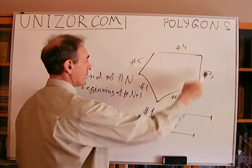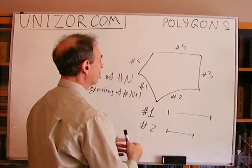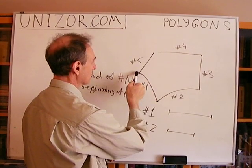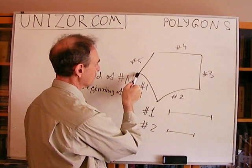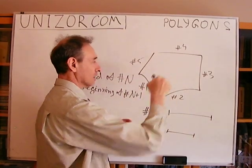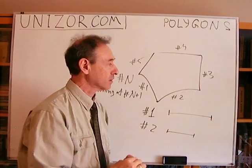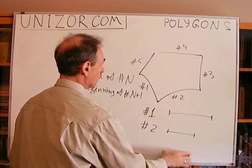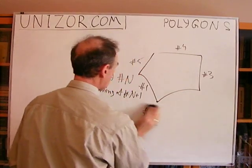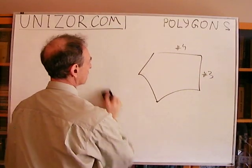Now, at the very end, when we have exhausted all the segments we have, the ending point of the last segment should coincide with the beginning of segment number one. And that actually closes the whole loop — and that's how we have the polygon. We can have it drawn in various ways, and there are different ways to draw a polygon. So let's try to differentiate different polygons.